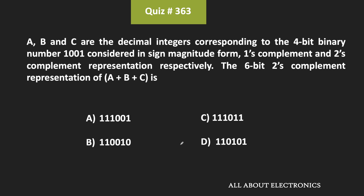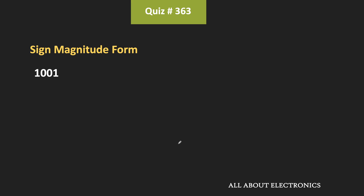Welcome to the YouTube channel all about electronics. In this question, we have been given that A, B, and C are the decimal integers corresponding to a 4-bit binary number 1001, when considered in sign-magnitude, one's complement, and two's complement form respectively. We need to find the 6-bit two's complement representation of A plus B plus C.